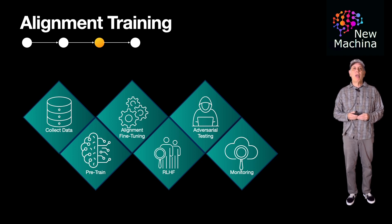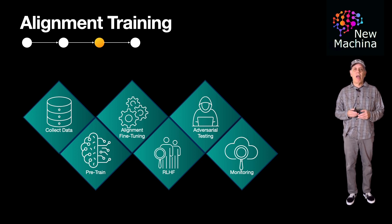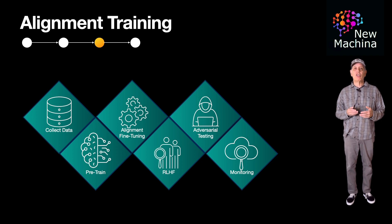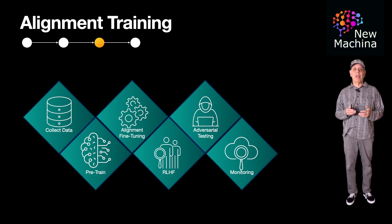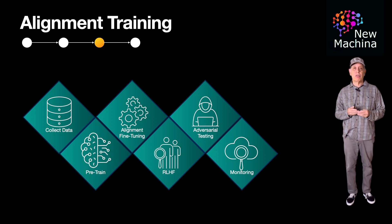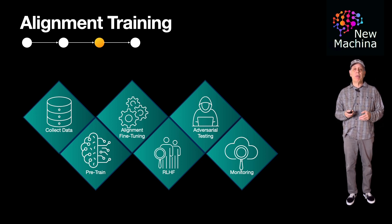It's important to note that in 2024, methods and alignment training are evolving quickly. For example, instead of using RLHF in the fourth step of the LLM training lifecycle, one of several new methods that has emerged is Direct Preference Optimization, or DPO for short. DPO simplifies training and reduces computational overhead, making it more efficient than traditional RLHF approaches. We are likely to see other training improvements in 2025 and beyond.